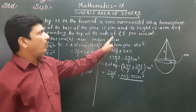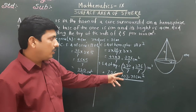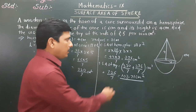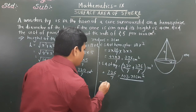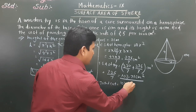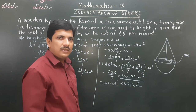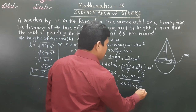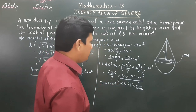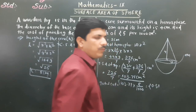The rate is Rs. 5 per 1000 cm². We have 103.71 cm². Total cost = 103.71 × 5 / 1000 = Rs. 0.51, which is 51 paise.